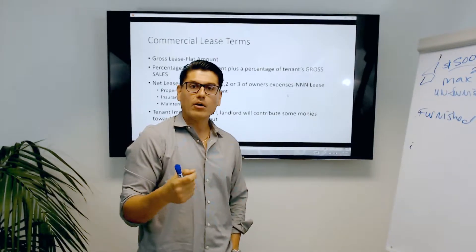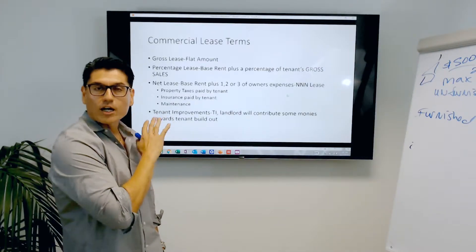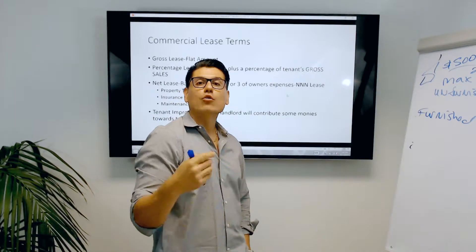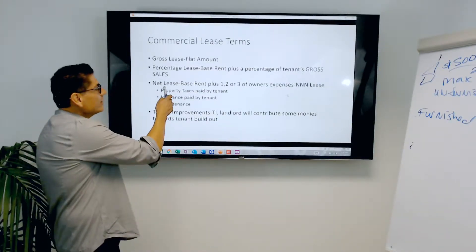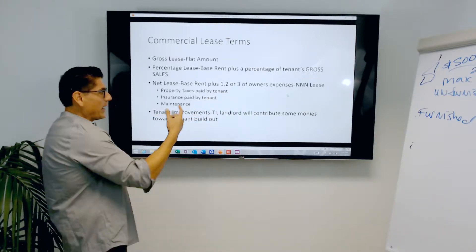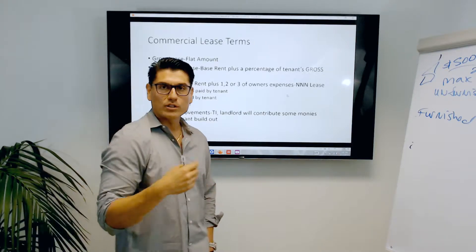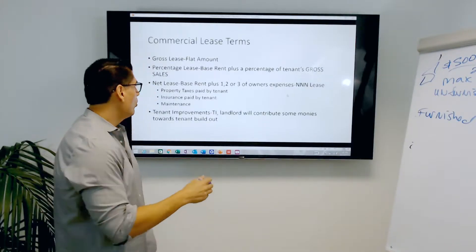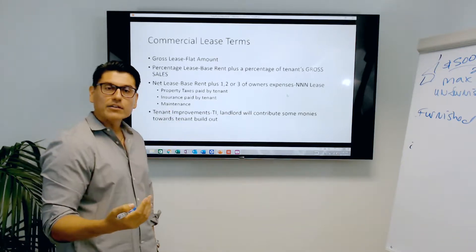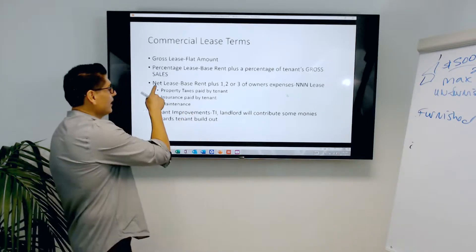If you go to shopping malls like Westfield, that's the type of percentage lease you're going to get — a base rent plus a percentage of your gross sales. A net lease is very common. In a net lease, you pay a base rent plus a portion of the owner's expenses: property taxes, insurance, and maintenance — often called CAM, common area maintenance. That's a triple net lease. If you pay only one expense, it's a single net lease; two expenses, a double net lease.